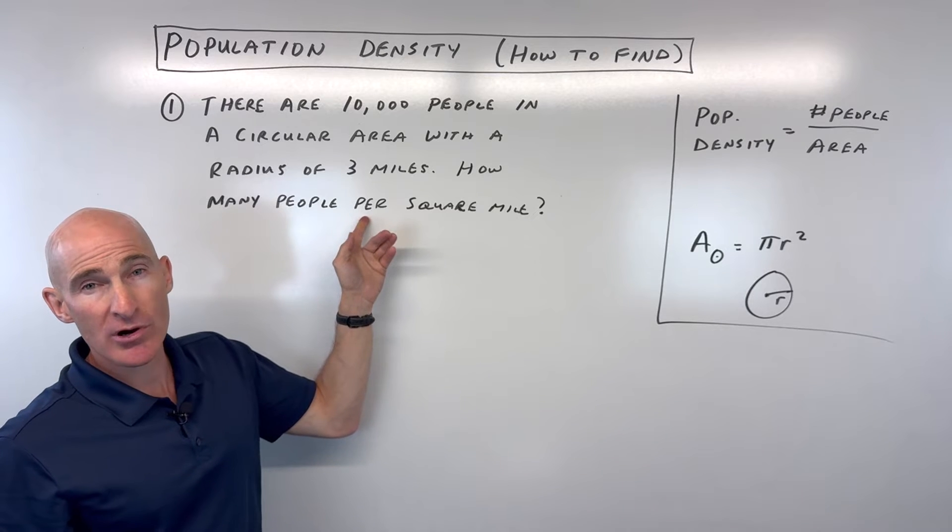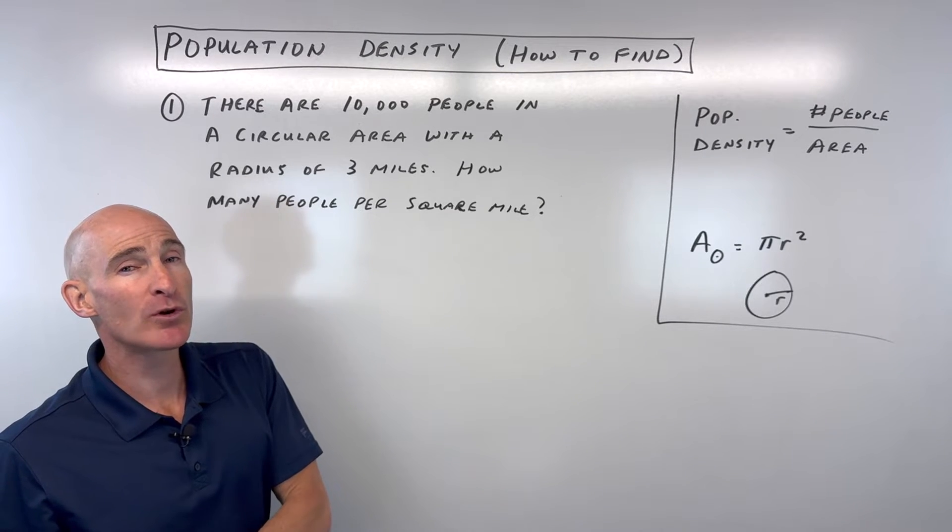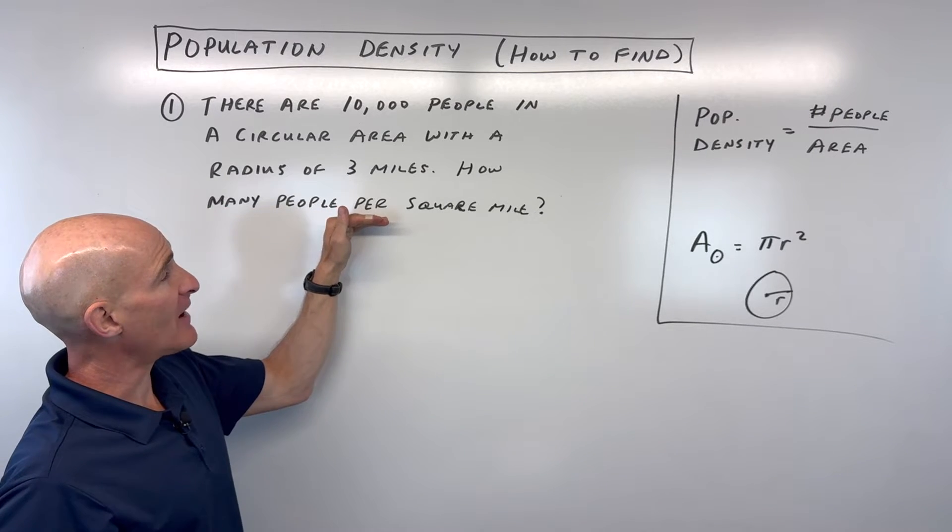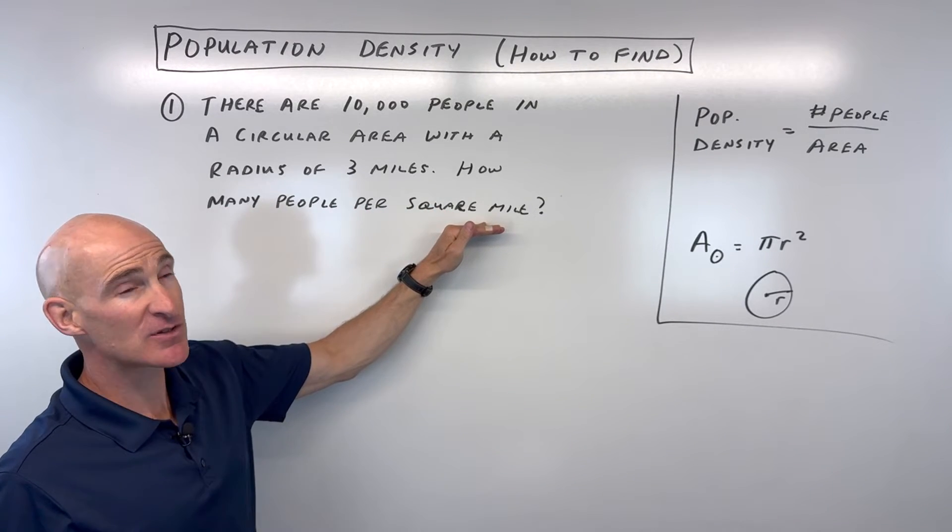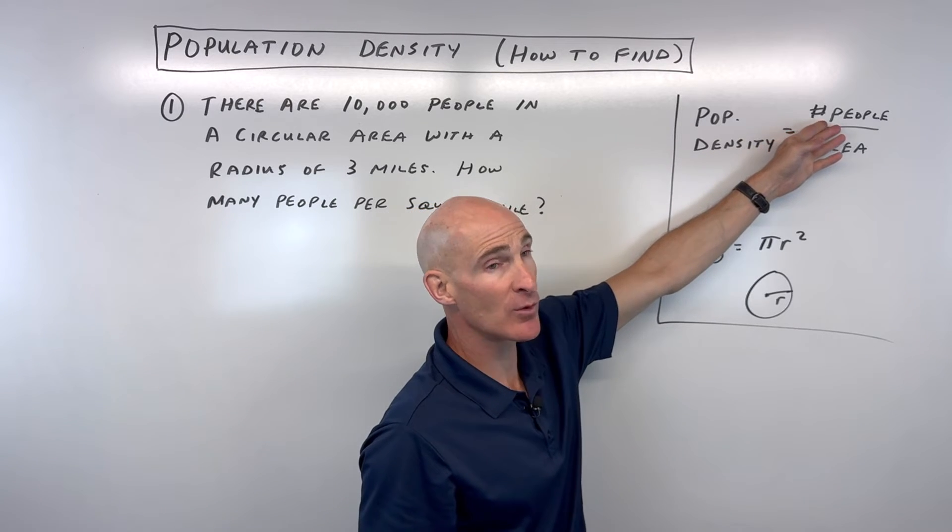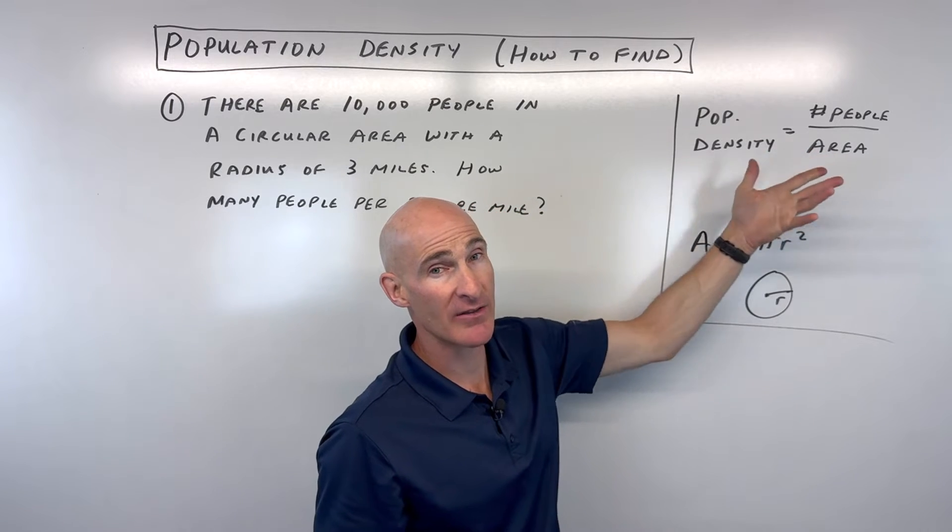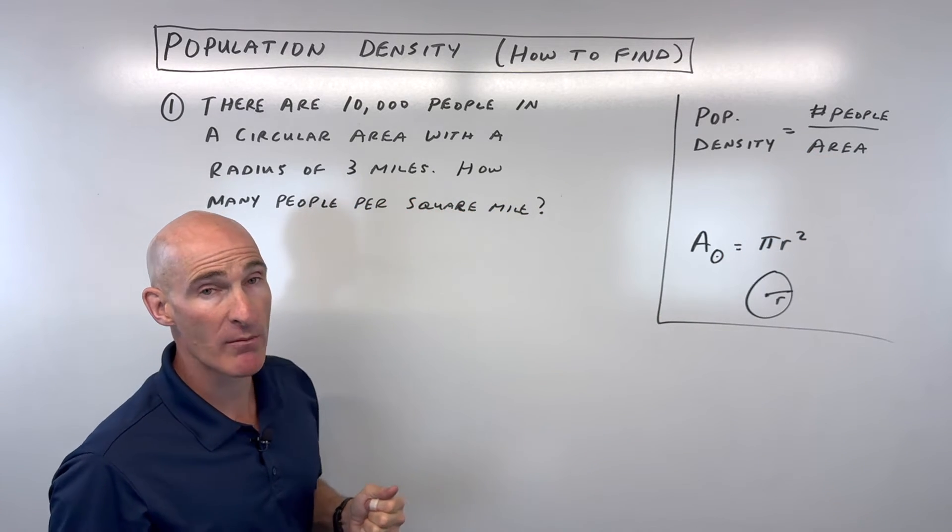You see this word per? In math, whenever you see the word per, that means divided by. So you can see it's the number of people divided by the number of square miles. That fits perfectly with this formula. The number of people divided by—the fraction bar is divided by—the area in this case in terms of square miles.